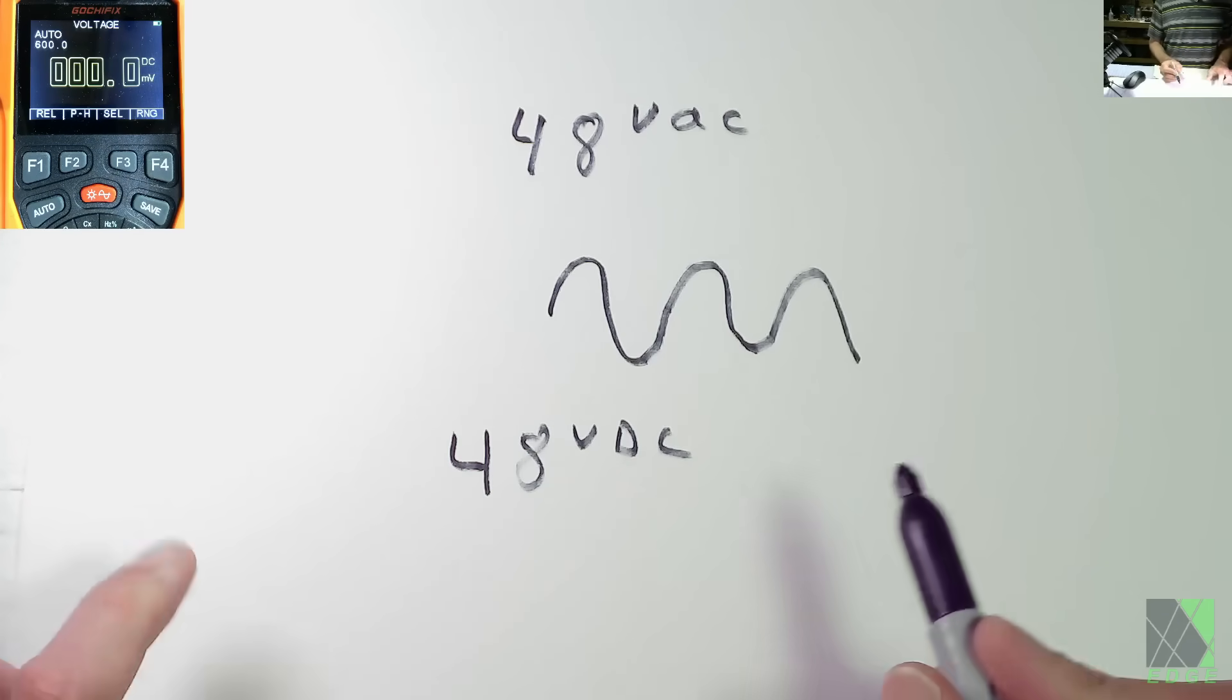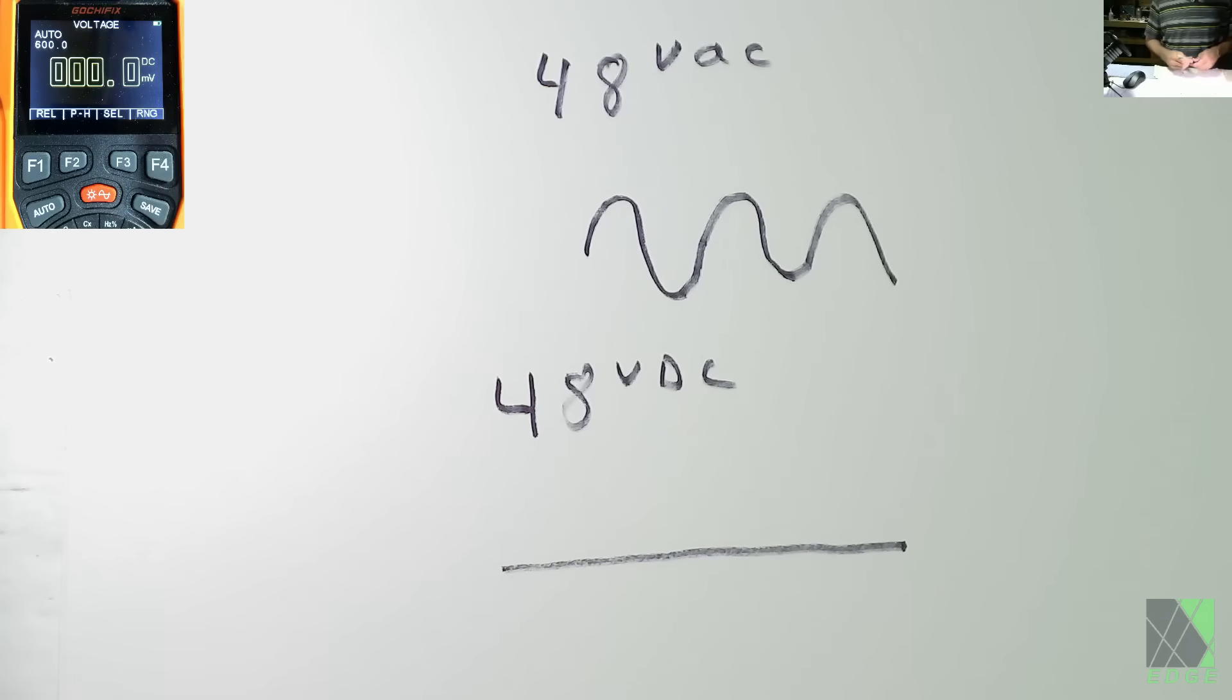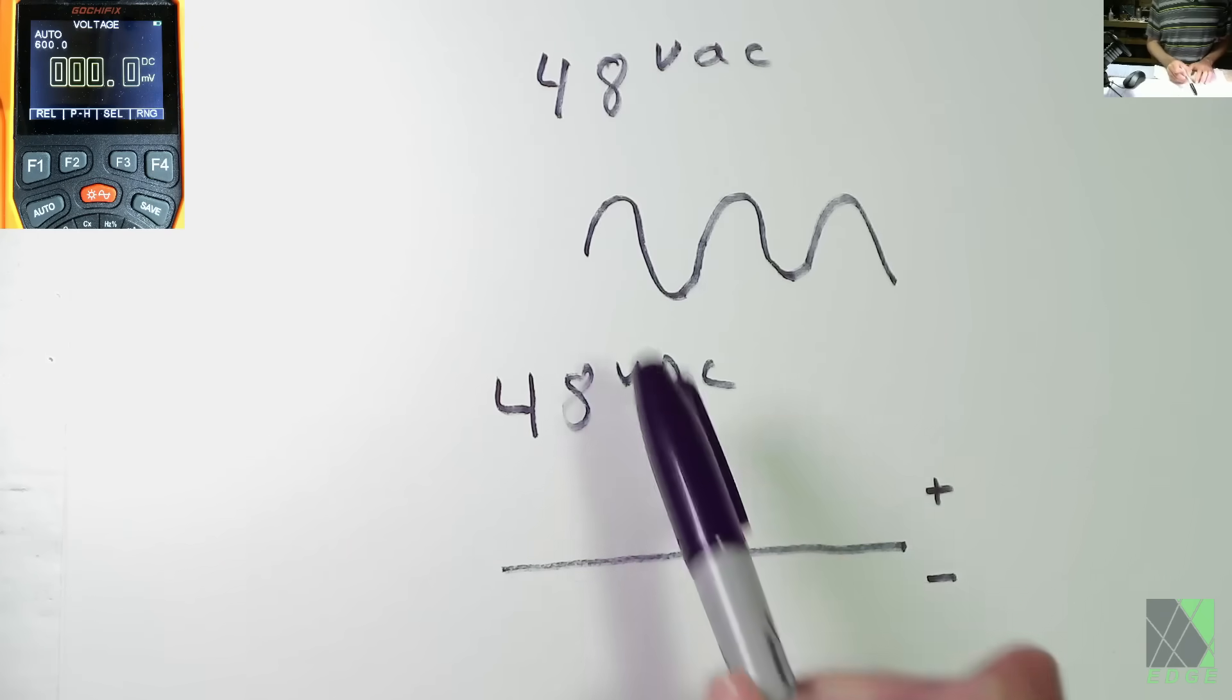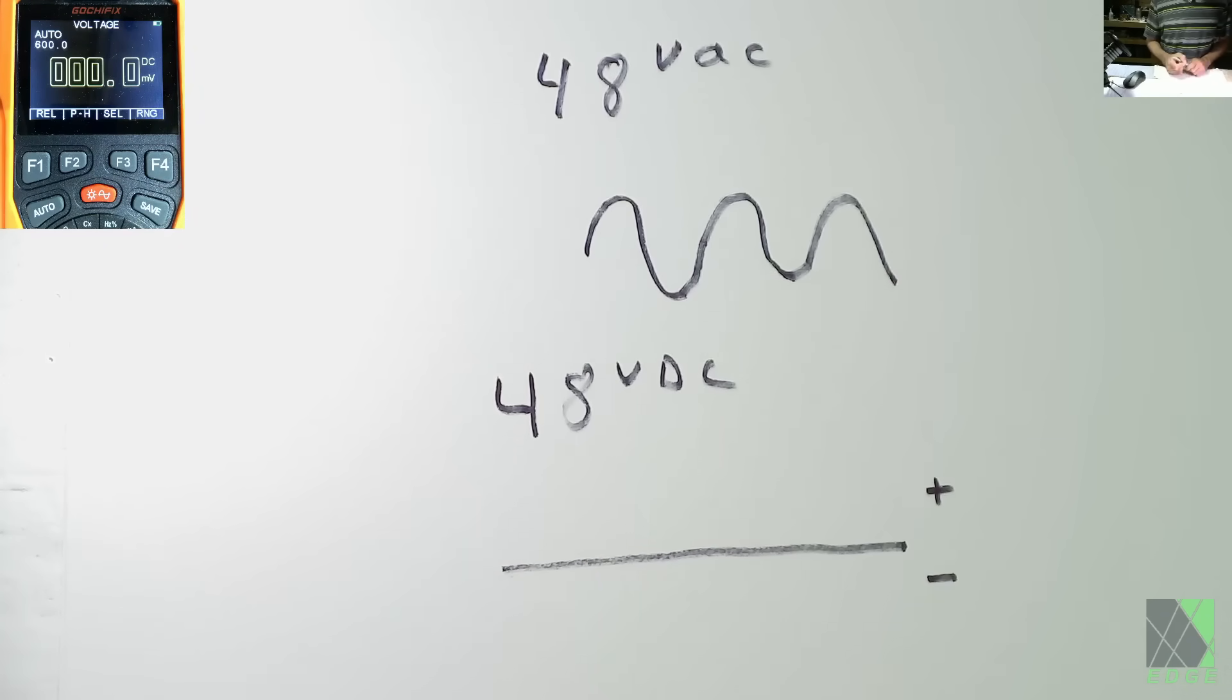But DC is represented by a straight line. It doesn't go back and forth. It just keeps going and you will have your positive and your negative. And that won't change. It's always going to be the same way. It doesn't go back and forth. Now you can see already that if you were to take DC and AC and compare them on say an oscilloscope or plot them as a waveform, they are absolutely very different. And as a result, they behave differently.